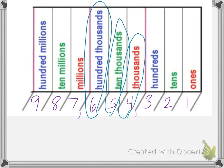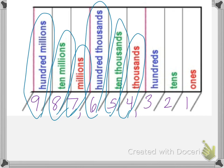So if you wanted to know which place was in the millions place, you would just look. The seven is in the millions. The eight is in the ten millions. And the nine is in the hundreds millions place.